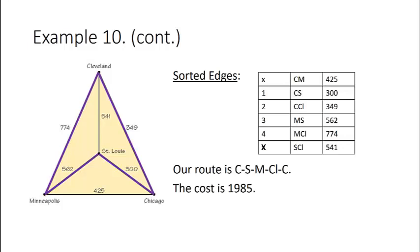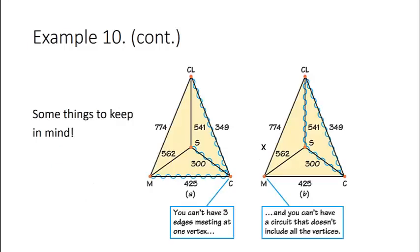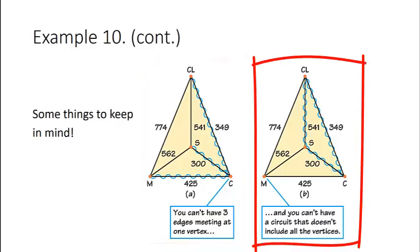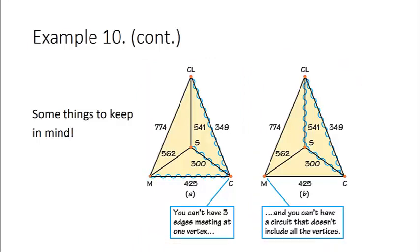With the sorted edges method, remember the two things to keep in mind: we cannot have three edges meeting at a vertex, and we cannot have a circuit that does not include all of the vertices. Those are the only two things to avoid with the sorted edges method.